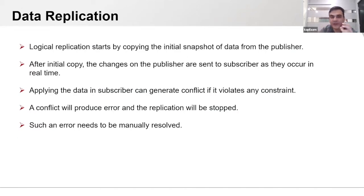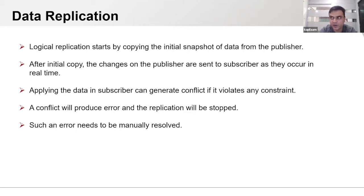Basic replication works by starting with copying the initial snapshot of data from the publisher. Once the initial data is copied, changes on the publisher are sent to the subscriber as they occur in real time — we get data change by change based on each operation. While applying data on the subscriber, conflicts can occur if it violates any constraint like a primary key, null constraint, or check constraint.